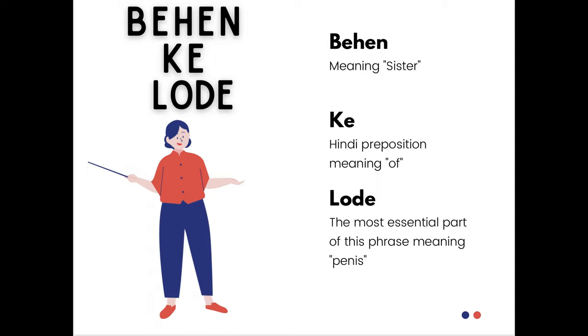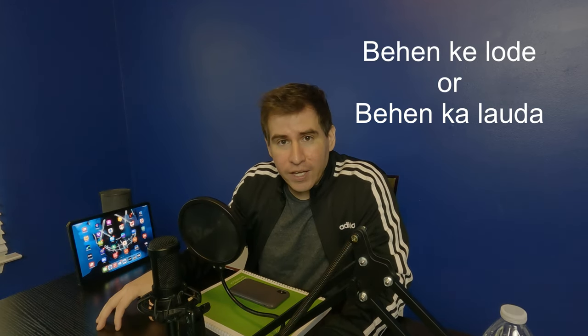Now let's break this phrase down. The first word is 'behen,' which you'll remember from the swear word 'behen chod.' The second word 'ke' is a Hindi preposition meaning 'of.' And the final and most essential part of this phrase is the word 'laure,' also pronounced as 'laura,' which means penis. So you can either say 'behen ke laure' or 'behen ka laura' — it means the same thing.